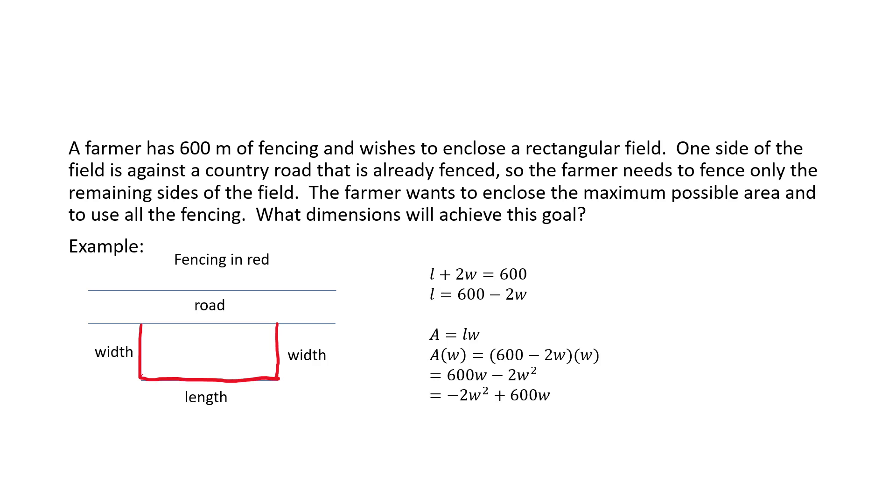From the diagram we can see that we don't need fencing along the road. So we really only need three sides worth of fencing. And those three sides need to total 600 meters. So if we let each of these two sides be width and this other side be the length, we see that L plus 2W will equal 600.